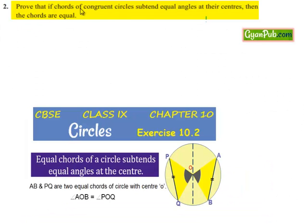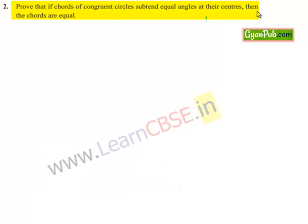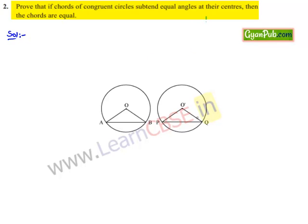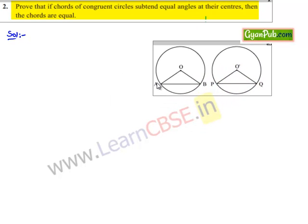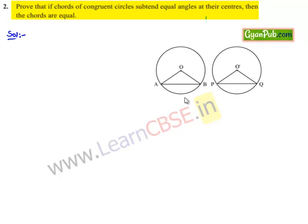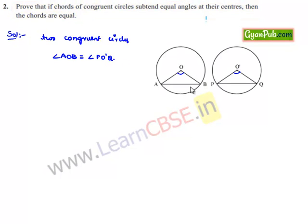Moving on to question number 2: prove that if chords of congruent circles subtend equal angles at their centers, then the chords are of equal length. Let us consider two circles with centers O and O', and let AB and PQ be chords in the two congruent circles which subtend equal angles at the center, that is, angle AOB equals angle PO'Q. We need to prove that AB equals PQ. In triangles AOB and PO'Q: